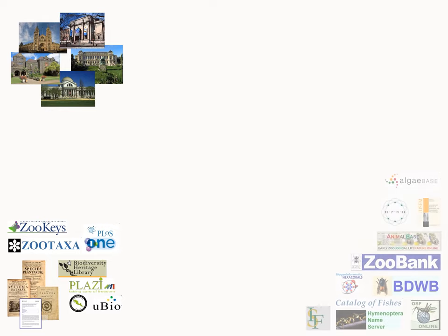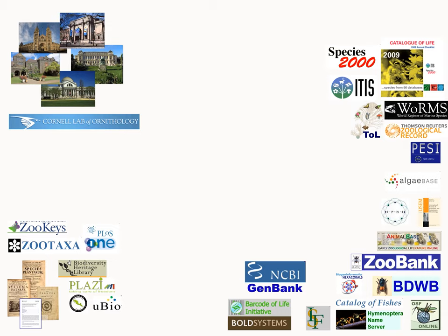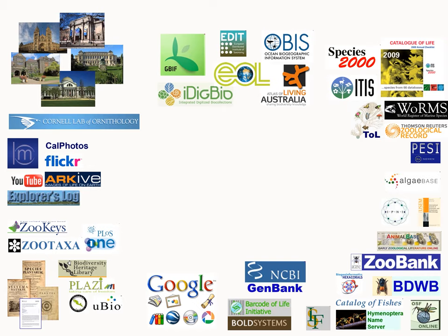There is a lot of biodiversity information in what we call nomenclators — organizations that deal with scientific names of things as names, not necessarily as taxa. Then there are groups of data sets that deal with names as taxa, like Catalog of Life, WoRMS, ITIS, and similar. There are also databases dealing with observations of organisms, like eBird, genetic data sets, online media files, and aggregators. Biodiversity data exists everywhere.